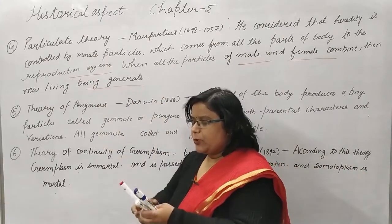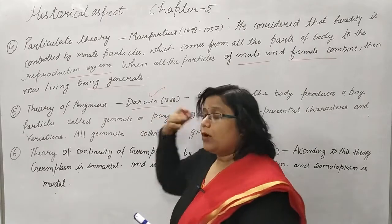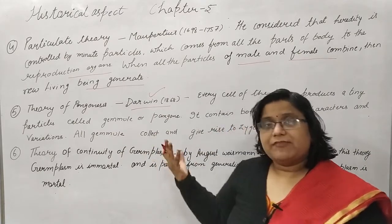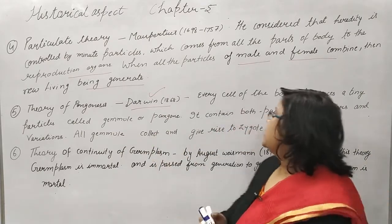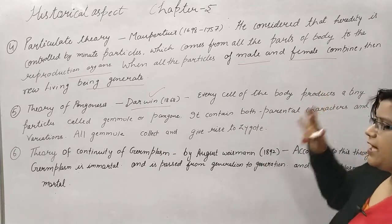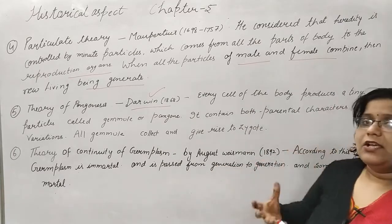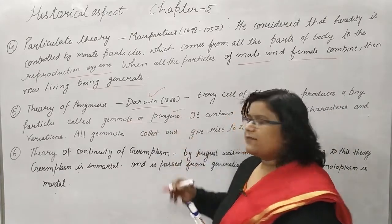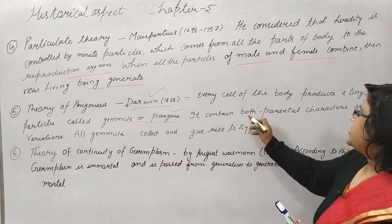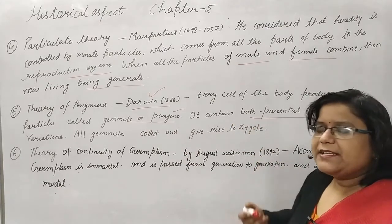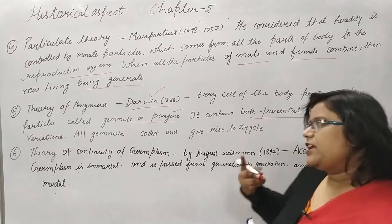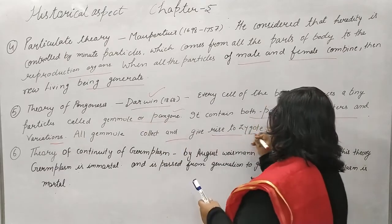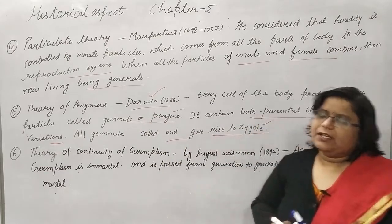The Theory of Pangenesis was given by the famous Darwin. He said that every cell of the body produces a tiny particle called a gemmule. These gemmules carry parental characteristics and variations, and when collected together they ultimately generate the new offspring.